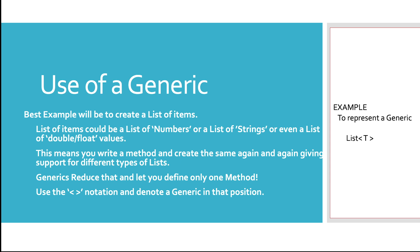So we would write list of integer, list of string, list of double values — which is just unnecessary code. We are writing three different methods to do just one set of actions. In order to reduce that, they came up with the concept of generics, which is very famous in Java. That's been derived as part of Dart as well, and we are going to be talking about that in this video.